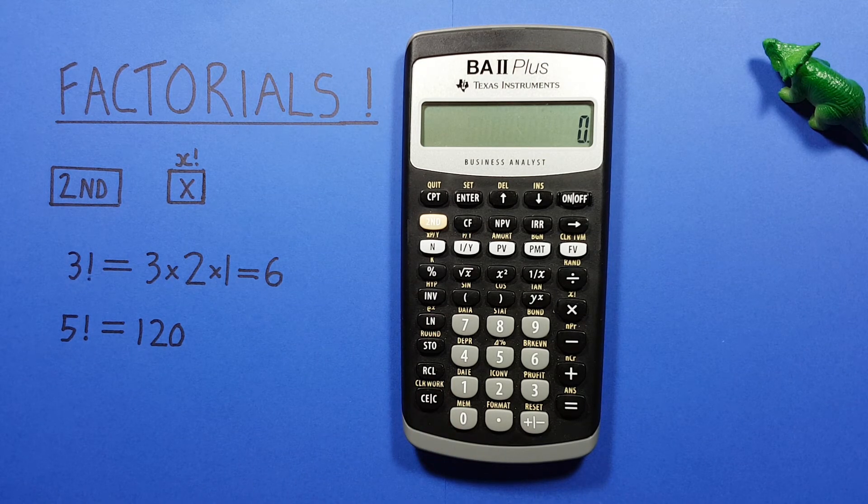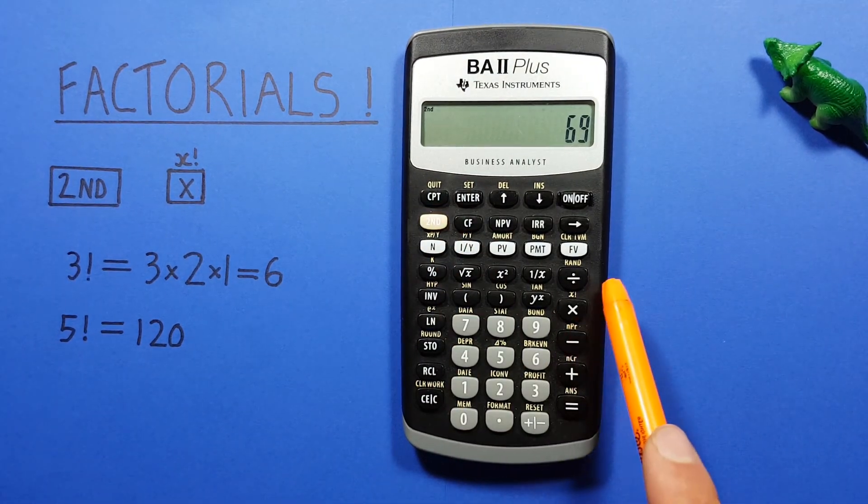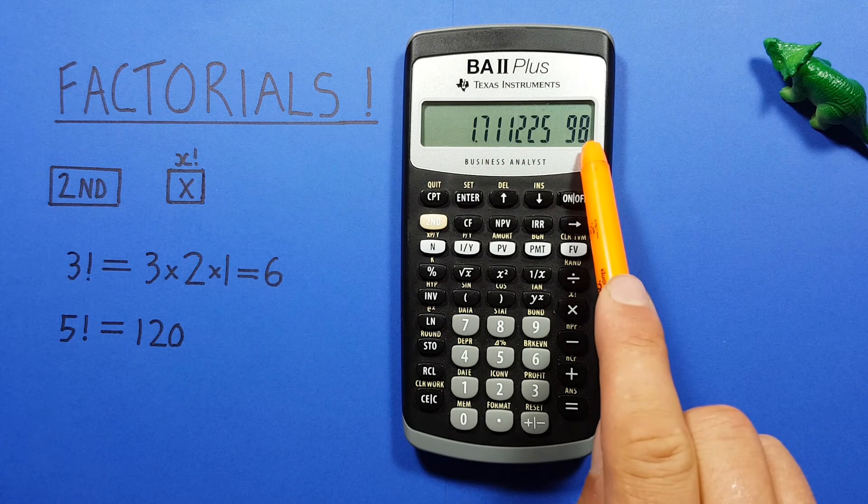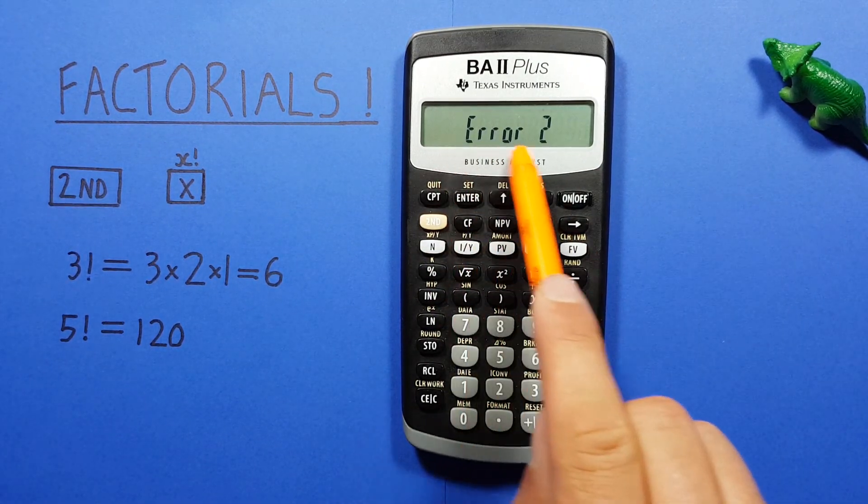The largest number this calculator can give you a factorial for is actually 69 factorial. See, we get a result there, while if we try 70 we get that error.